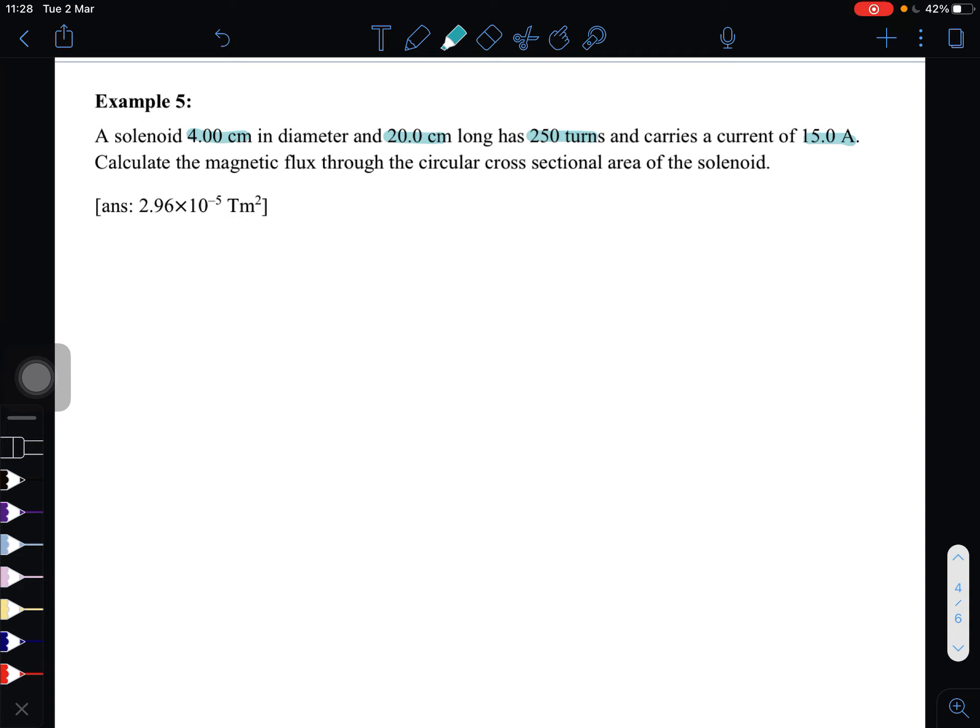So we want to find the magnetic flux. Again, magnetic flux formula is BA cos θ. Now we have diameter, so we can find the value for area, since area is πr².